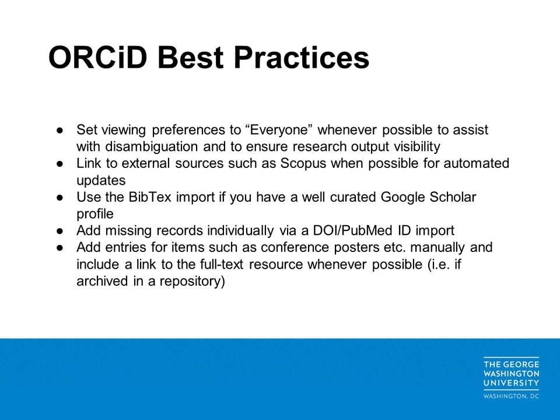In summary, here are a few tips for creating and curating your ORCID profile. Set viewing preferences to everyone whenever possible to assist with disambiguation and to ensure research output visibility. Link to external sources such as Scopus when possible for automated updates. Use the BibTeX import if you have a well-curated Google Scholar profile. Add missing records individually via a DOI or PubMed ID import. Add entries for items such as conference posters manually and include a link to the full text resource whenever possible.